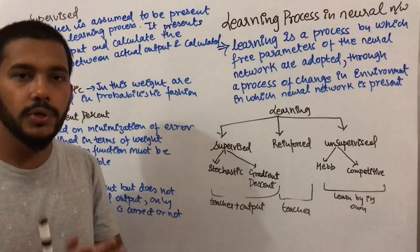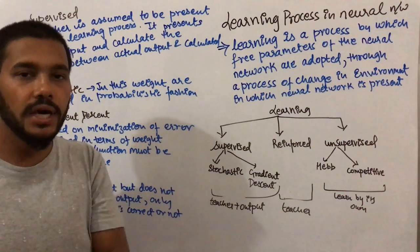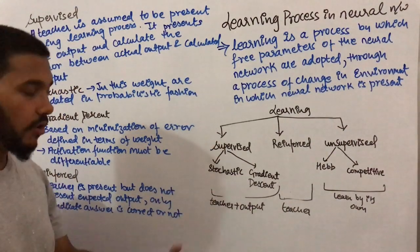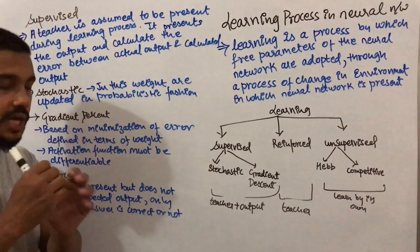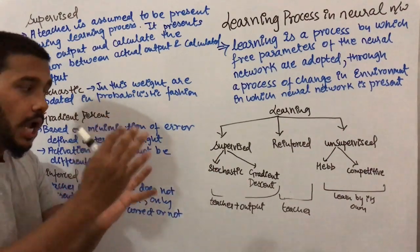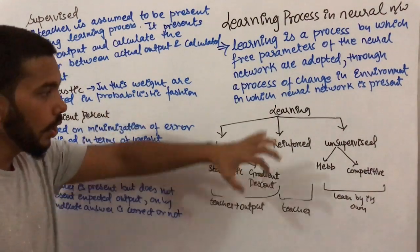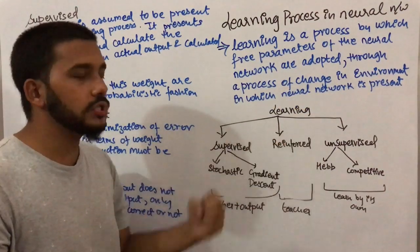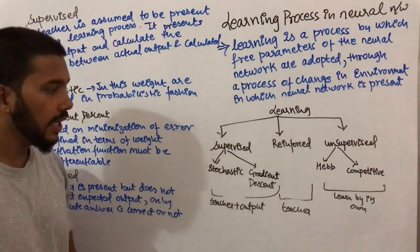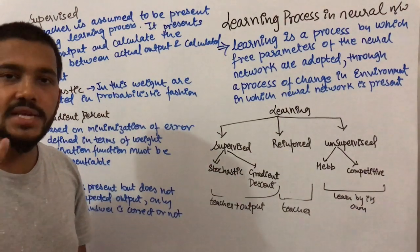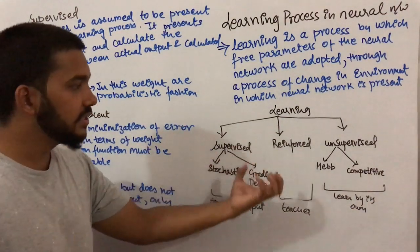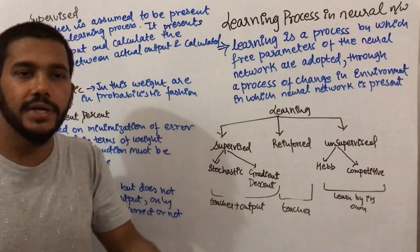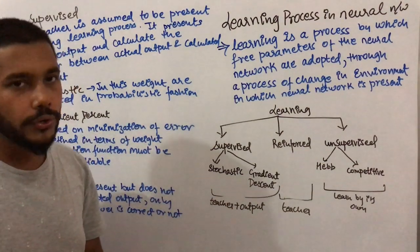In supervised learning, we find the error by taking the difference between the actual output and the calculated output, and a teacher is present who presents that actual output. In reinforced learning, a teacher is also present, but this teacher does not present an output — instead, the teacher only tells you whether the output you calculated is right or wrong.